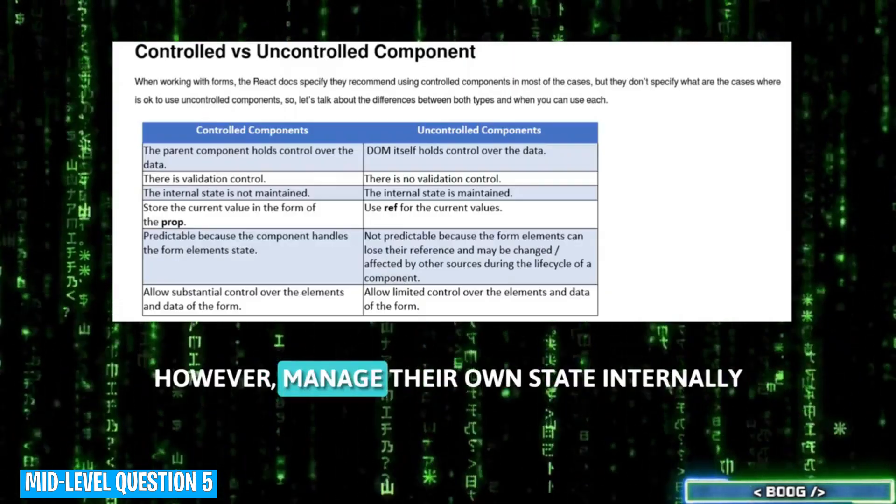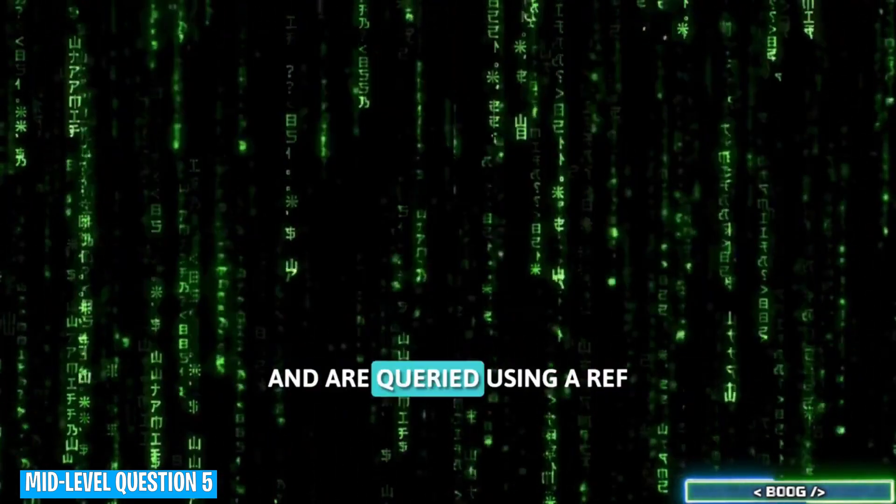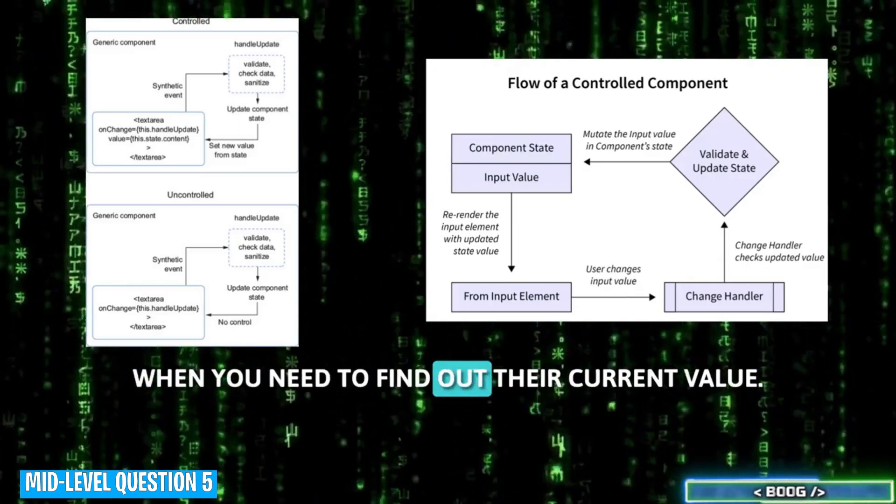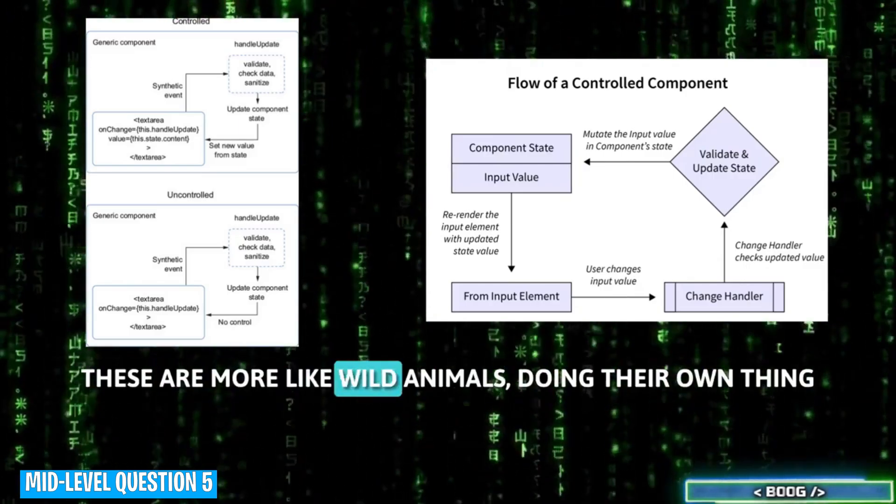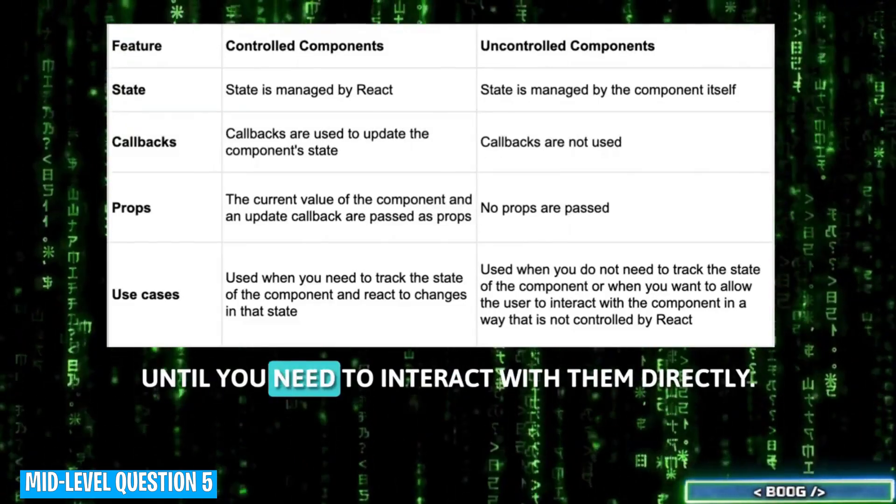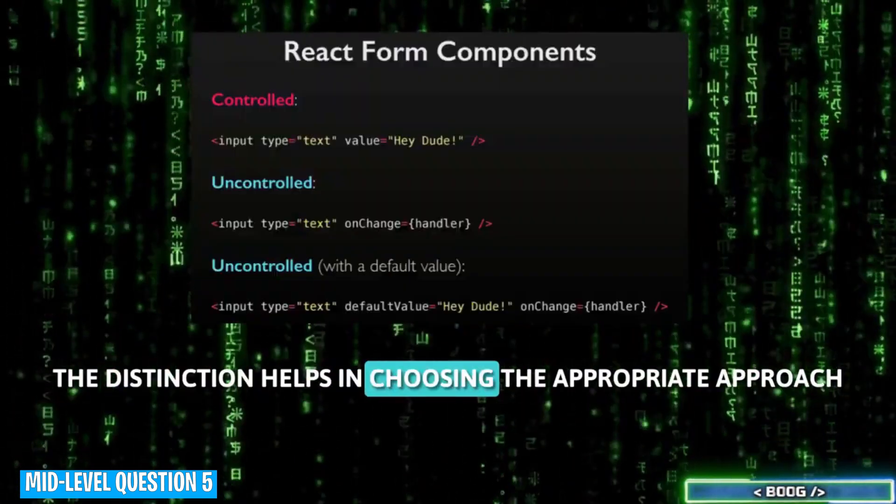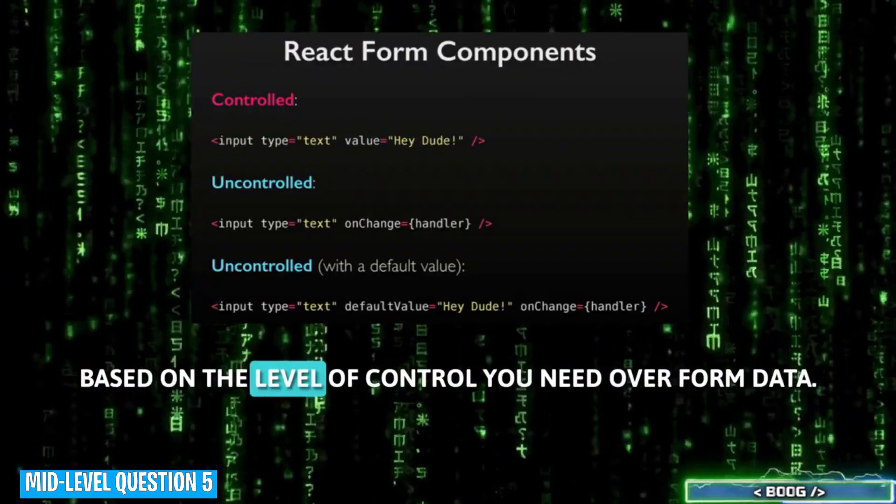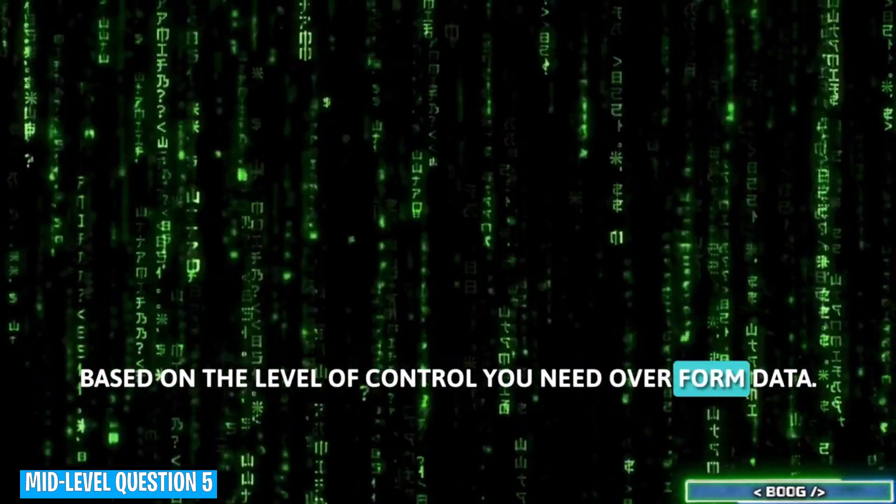Uncontrolled components, however, manage their own state internally and are queried using a ref when you need to find out their current value. These are more like wild animals, doing their own thing until you need to interact with them directly. The distinction helps in choosing the appropriate approach based on the level of control you need over form.